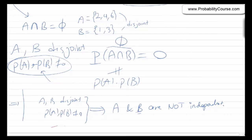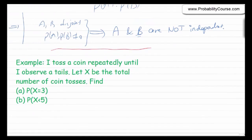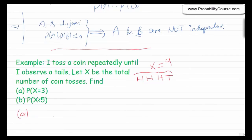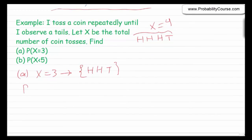Let's look at one last problem. I toss a coin repeatedly until I observe a tails, and let X be the total number of coin tosses. For example, if I observe heads, heads, heads, then tails, then X equals four. The question is: what is probability of X equals three, and what is probability of X less than five? For X equals three, the only possible outcome is heads, heads, then tails on the third toss. So probability of X equals three is the probability of observing heads, then heads, then tails.